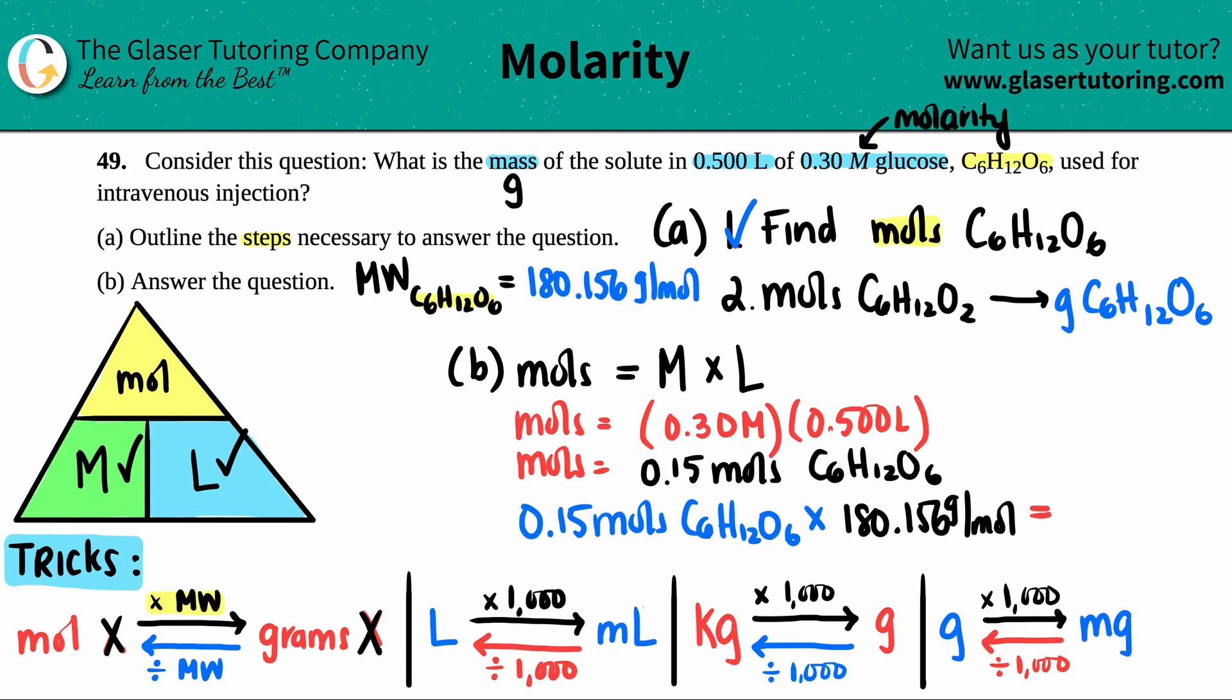So 180.156 grams per mole. And when we do that multiplication, we will get our answer out in grams. That's all we did. Moles times molecular weight equals grams. So let's just do it. This times 0.15, 180 times 0.15. Roughly we get, I'm going to use sig figs. Lowest number of sig figs is two.